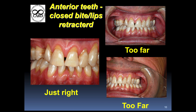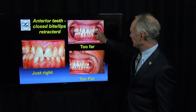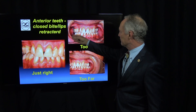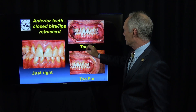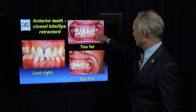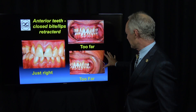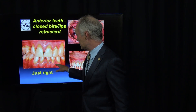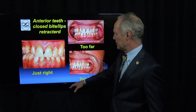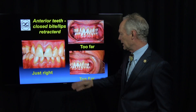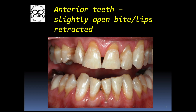For the anterior teeth closed bite with lips retracted — so the lips are retracted and the teeth are together. Too far away is distracting to the patient if they see the retractors or a lot of gum tissue — you just want to see the teeth. This is just right: back to about the bicuspids on each side, not a lot of lips, no nose or chin. Take a lot of the gingival tissue away, just enough to show the attached gingiva and the non-keratinized gingiva. For the anterior teeth slightly open with lips retracted, this is just right.